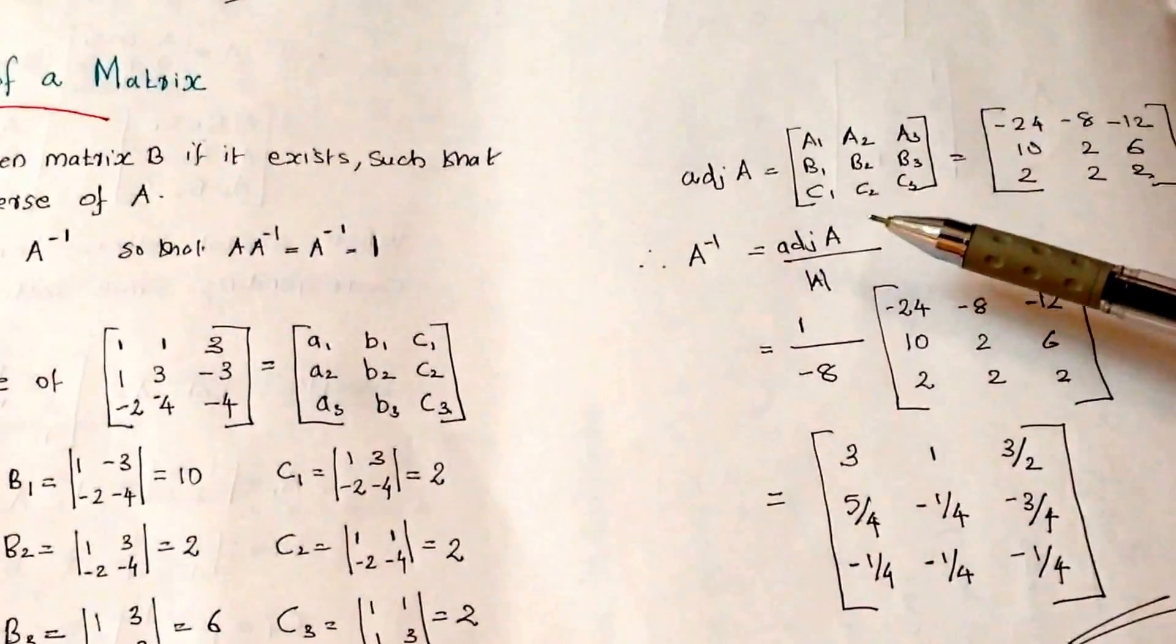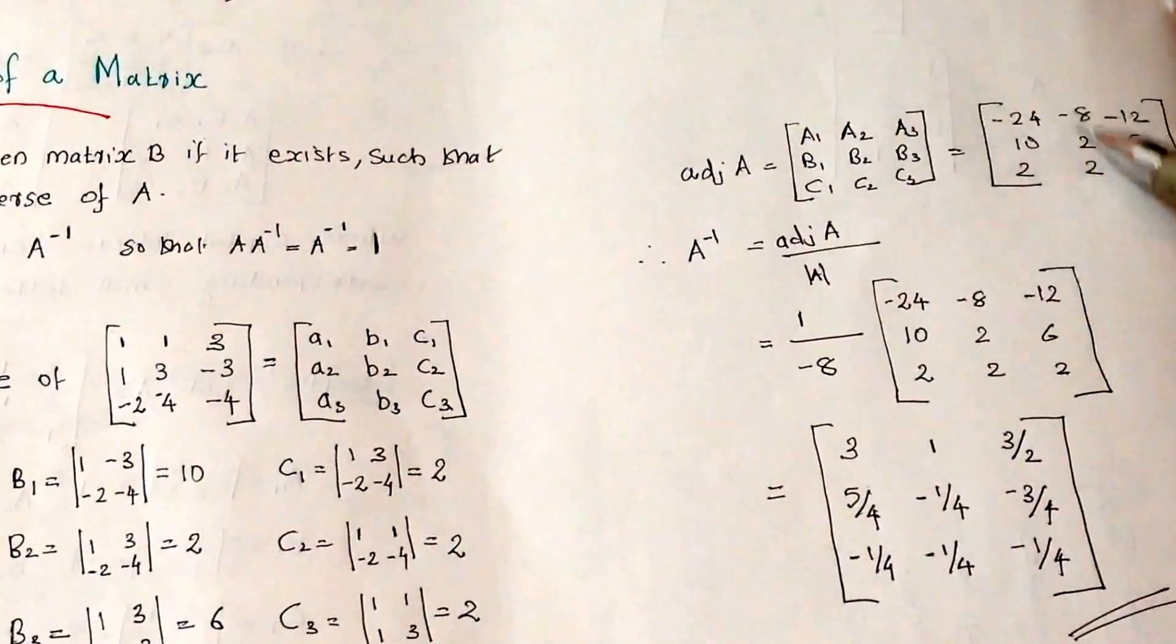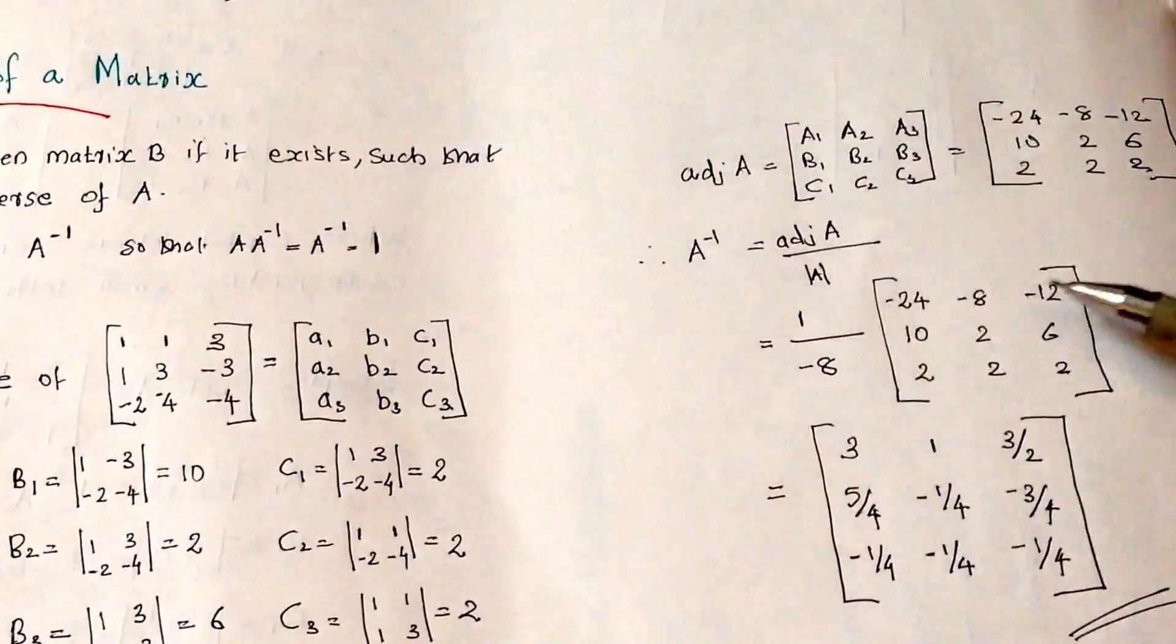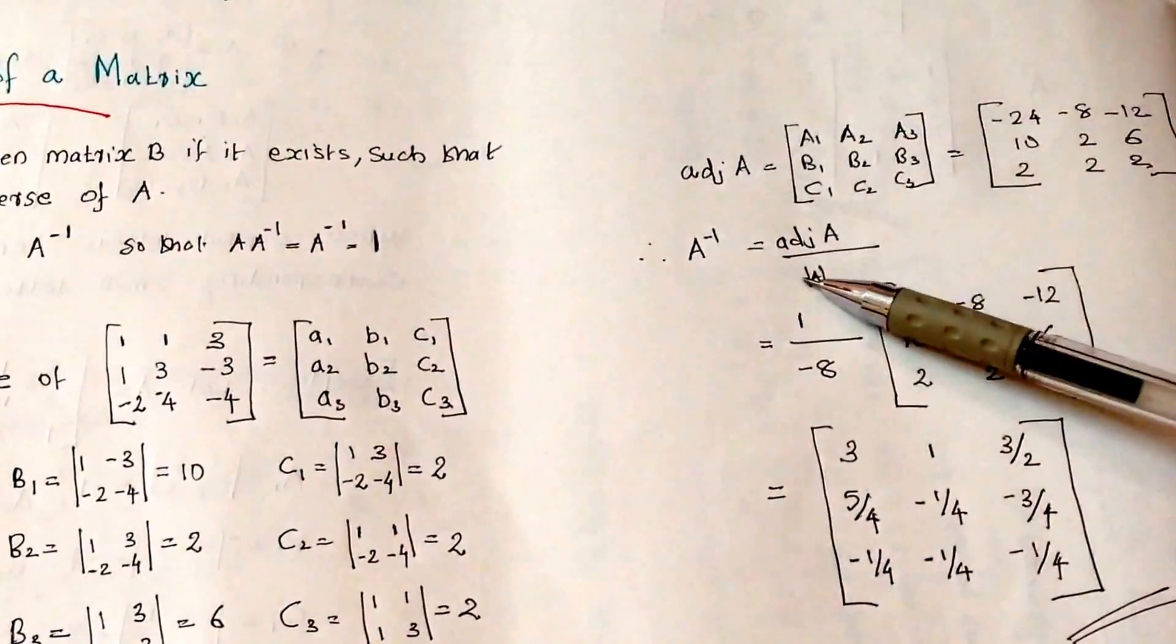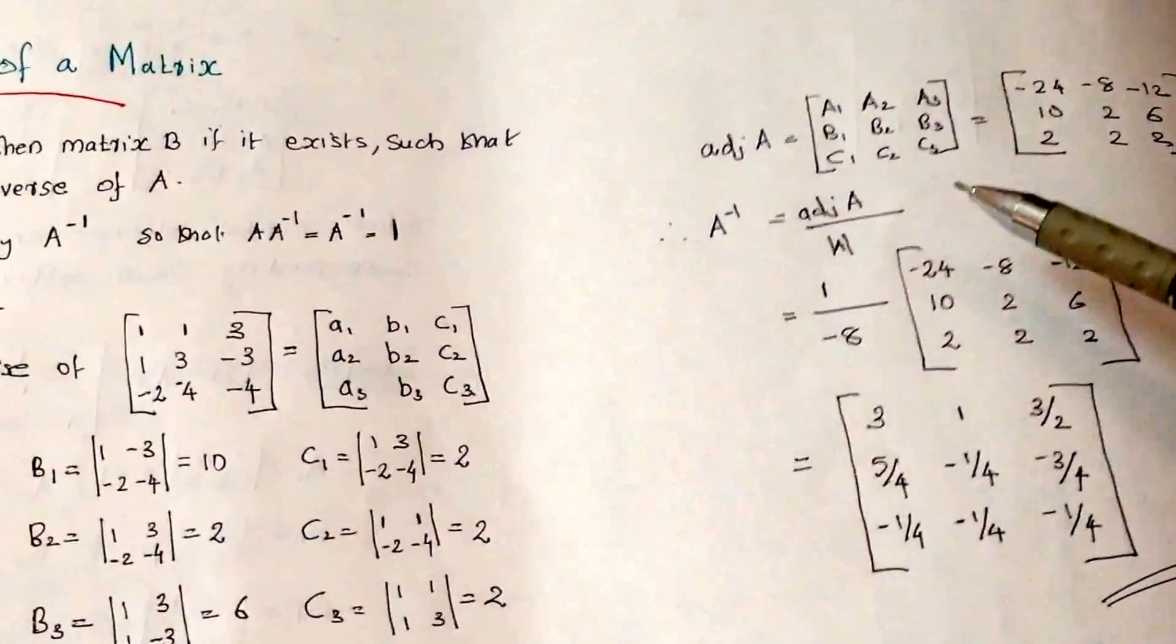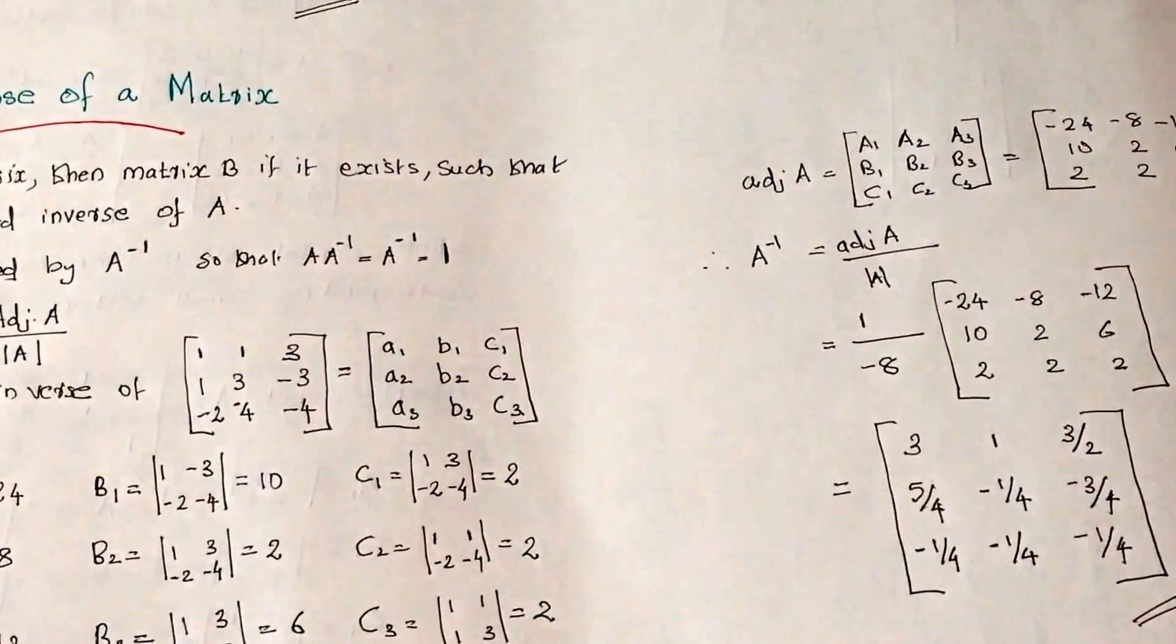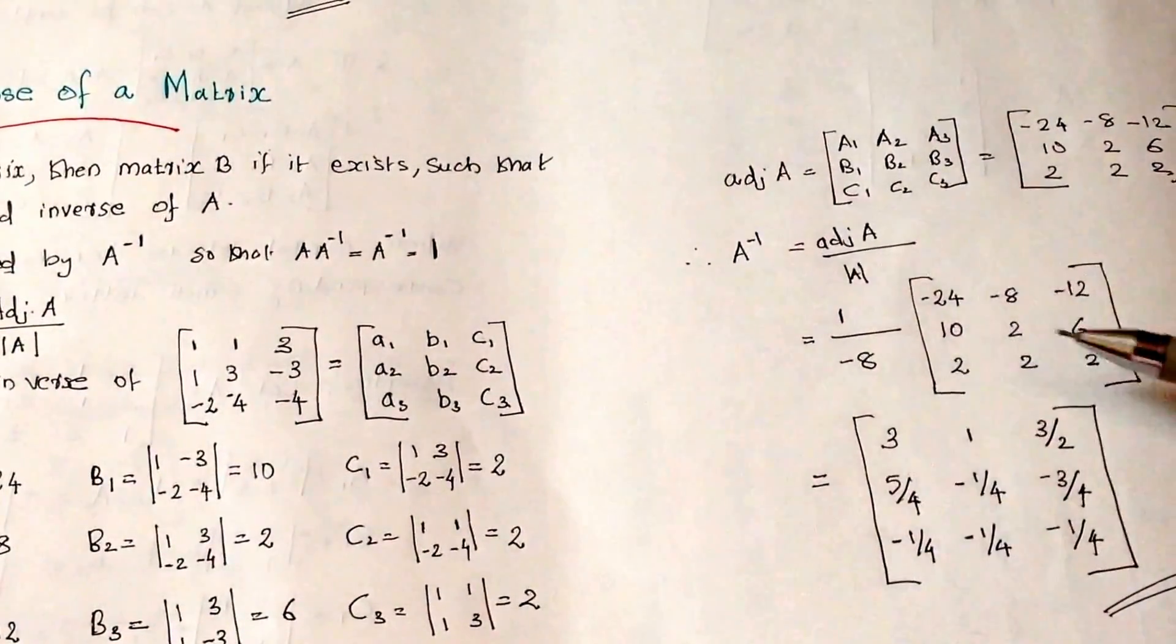A inverse equals adjoint A by determinant A. What is adjoint A? We got minus 24, minus 8, minus 12, 10, 2, 6, 2, 2, 2, divided by determinant A. The determinant A is minus 8. Therefore, 1 by minus 8 into this value.